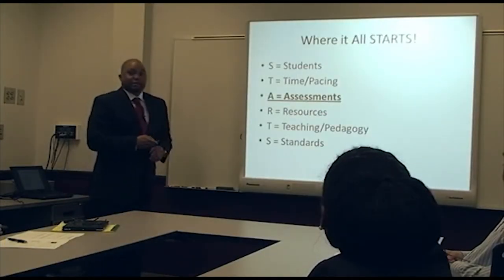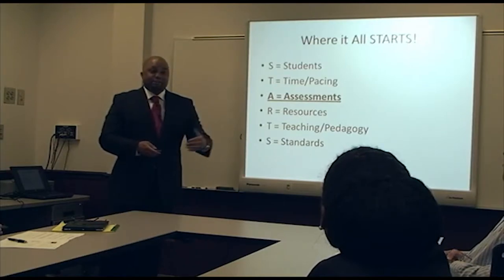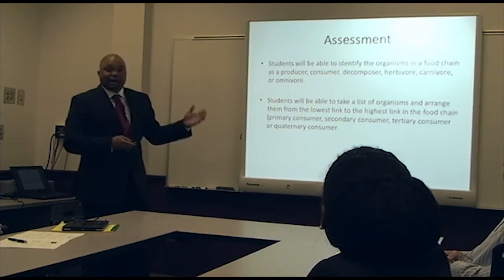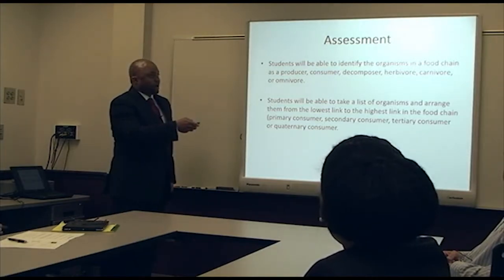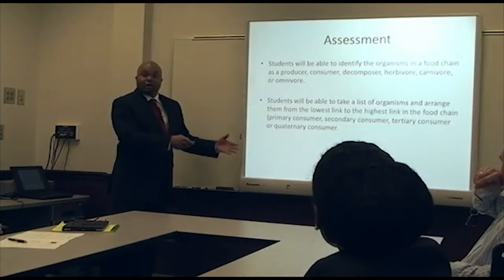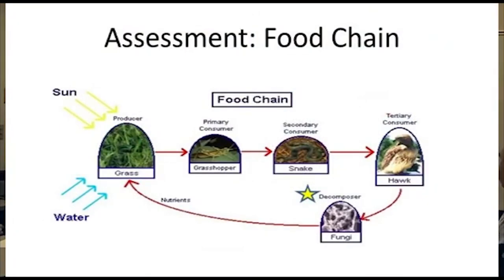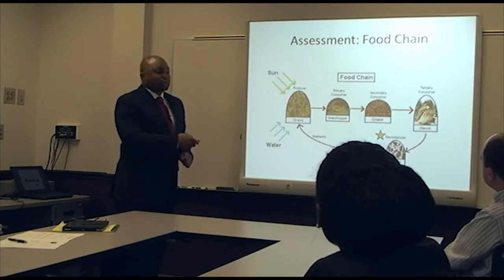The third component to consider when planning is assessments — what is the acceptable evidence to demonstrate mastery? We want to consider this before executing instructional activities. By the end of this lesson, students should identify components of the food chain: producer, consumer, decomposer, herbivore, carnivore, and omnivore, along with primary, secondary, tertiary, and quaternary consumers. This is a wealth of terminology students must master to construct and interpret a food chain.